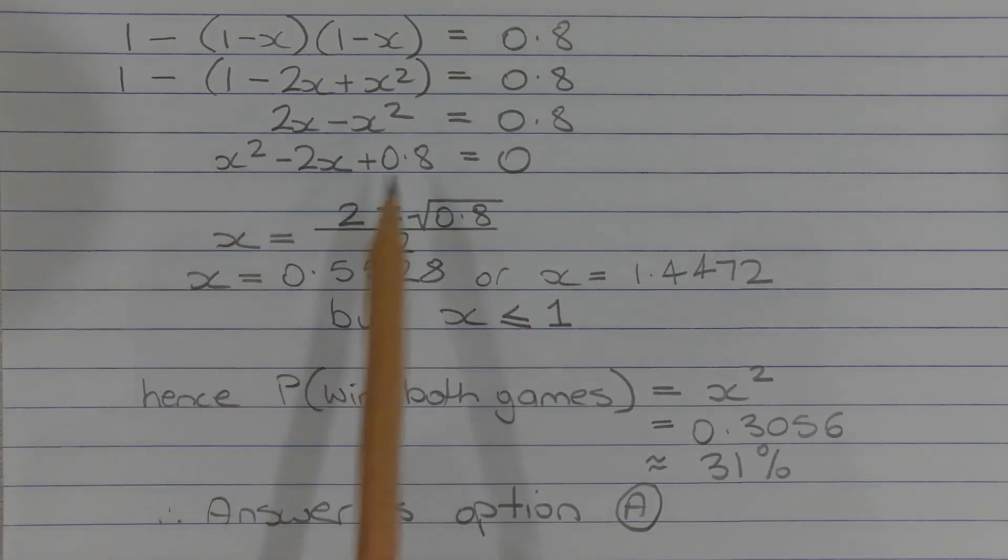Using the quadratic formula to find the values for x we get x equals 2 plus or minus the square root of 0.8 over 2. So x equals approximately 0.5528 or 1.4472.